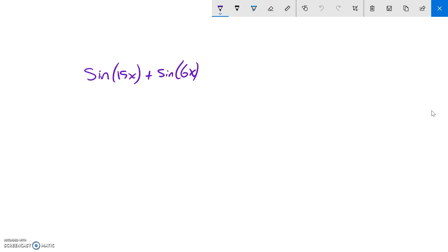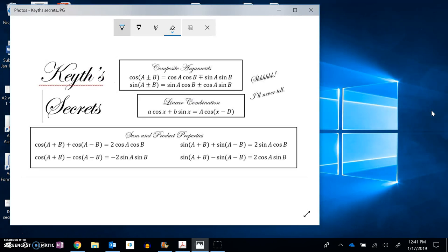I notice I have sine plus sine, so since it's sine plus sine, I'm going to peek at Keith here. Keith tells me if I have sine plus sine, sine of A plus B plus sine of A minus B is 2 sine cosine. 2 times sine times cosine.